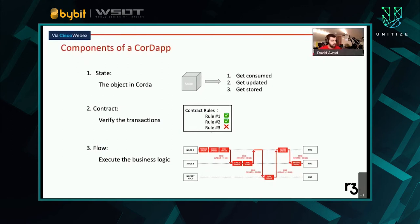These are the components of a CorDapp: states, contracts, and flows. States are any object in Corda — these are cars, loans, boats, mortgages, etc. Any object that is fungible that you want to represent digitally is a state in Corda terminology. Corda makes this very easy for you. States get consumed, updated, stored, created, and destroyed.